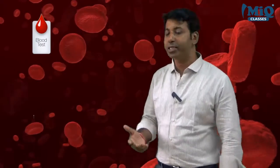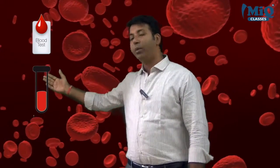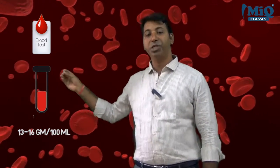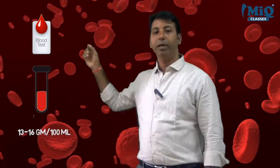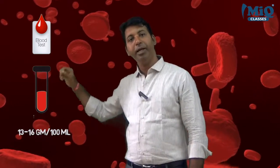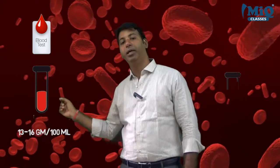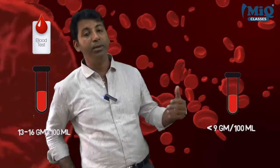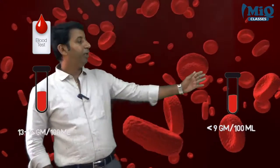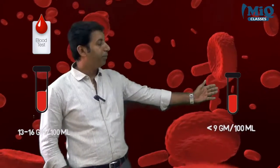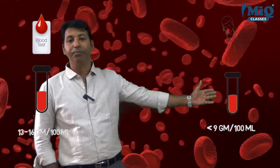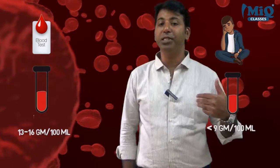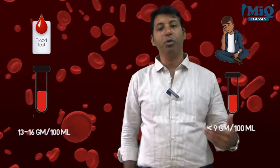In a blood test for a healthy man, the hemoglobin content should be around 13 to 16 grams per 100 ml of blood. If it goes less than 9, doctors consider that person an anemic patient.